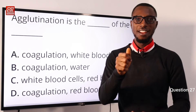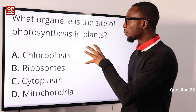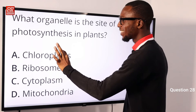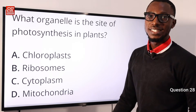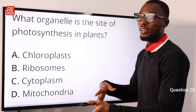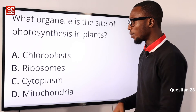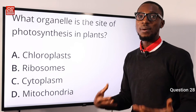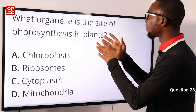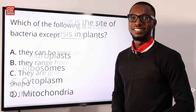Question 28: What organelle is the site of photosynthesis in plants? That is the chloroplast, which contains chlorophyll and is needed for photosynthesis. The ribosome is responsible for translation and formation of peptide bonds — making proteins. The cytoplasm provides a holding medium for cell components. The mitochondria is the powerhouse of the cell. The organelle that is the site of photosynthesis is the chloroplast — option A is correct.